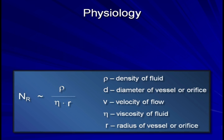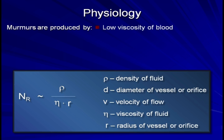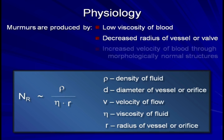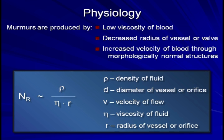Thus, turbulent flow is most likely when either blood viscosity is low, or when the radius of the orifice through which the blood is flowing is low. Increased velocity of flow through morphologically normal structures can also result in turbulence and thus a murmur.